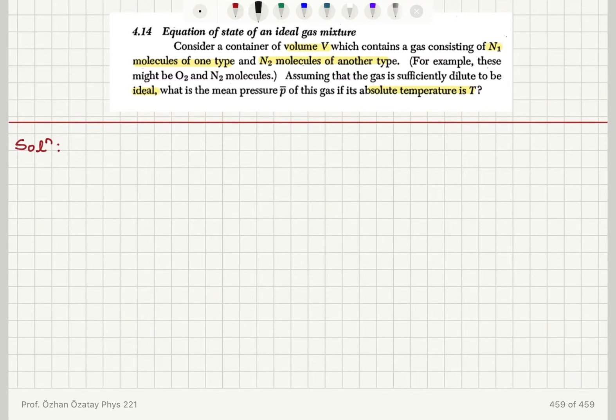We have the ideal gas law which says the mean pressure multiplied by the volume is the number of gas molecules times Boltzmann constant times temperature. So this is our ideal gas law: P̄V = NkT.